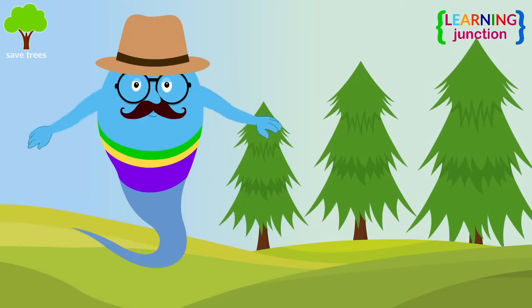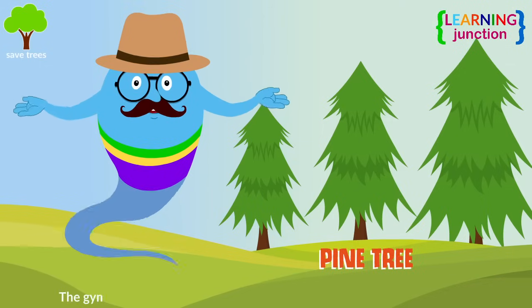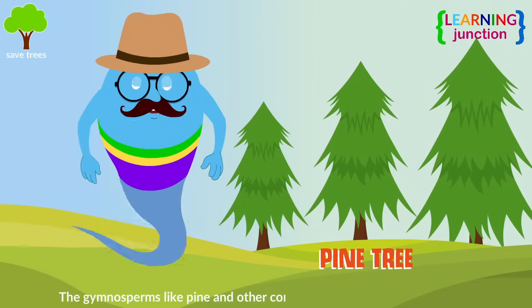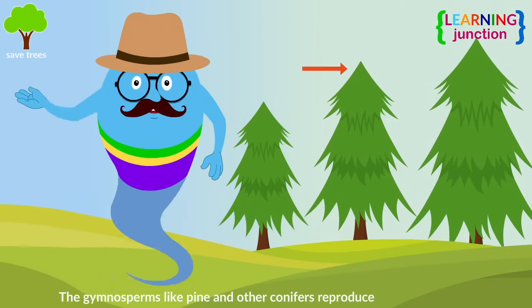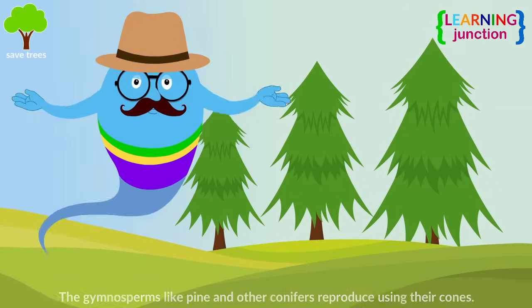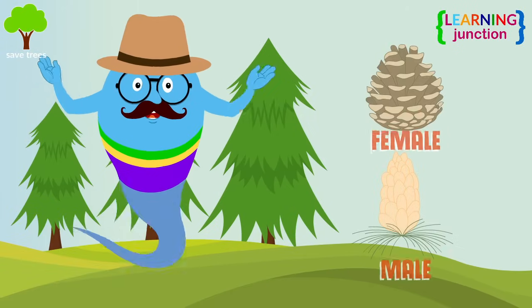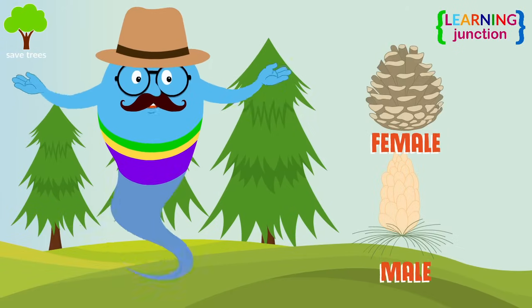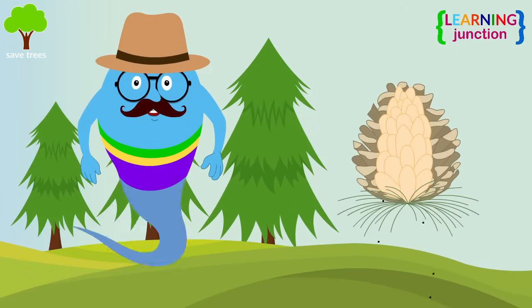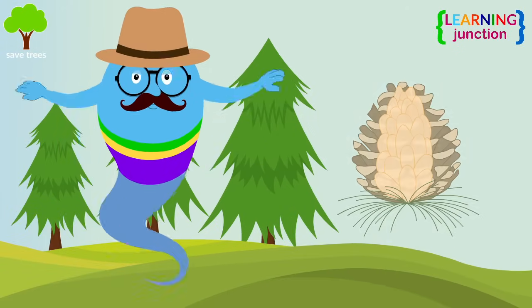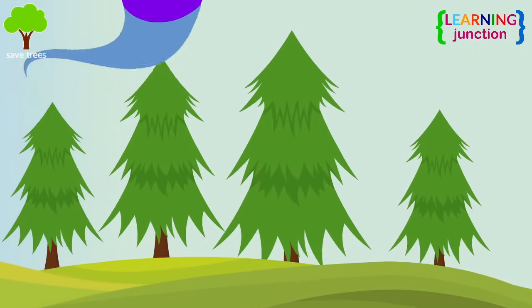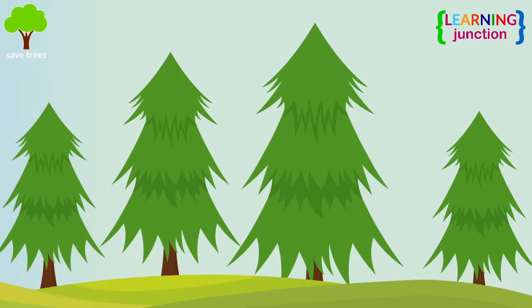Look at this pine tree. Gymnosperms, like pine and other conifers, reproduce using their cones. If the pollen lands on a female cone, then the female cone will produce seeds, and new plants grow from those seeds.